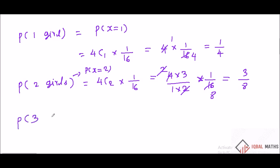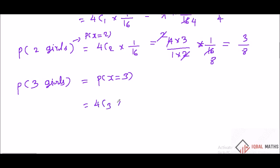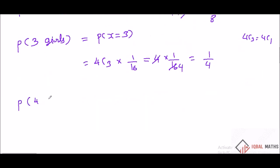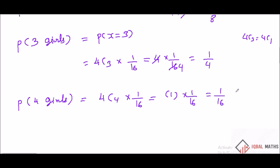P of 3 girls. P of X equal to 3 is 4C3 into 1 by 16. 4C3 equals 4C1, which is 4. So P of X equal to 3 is 4 by 16, equal to 1 by 4. P of 4 girls: 4C4 into 1 by 16. 4C4 is 1, so P of X equal to 4 is 1 by 16.